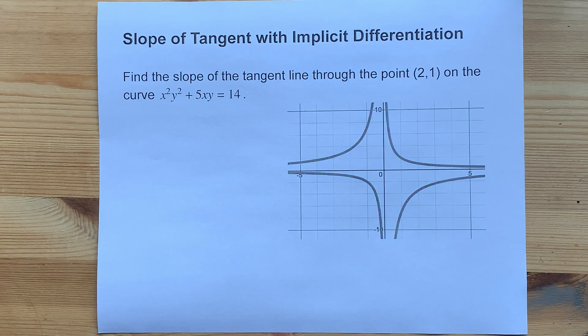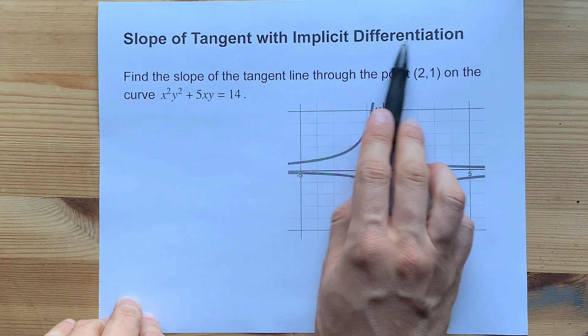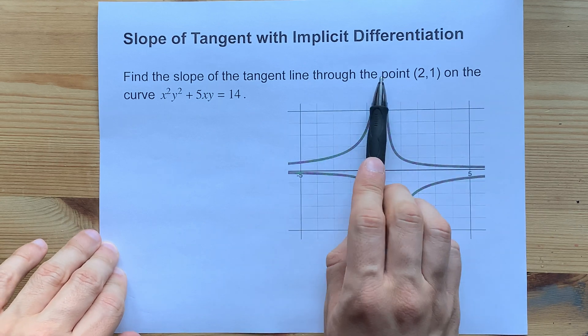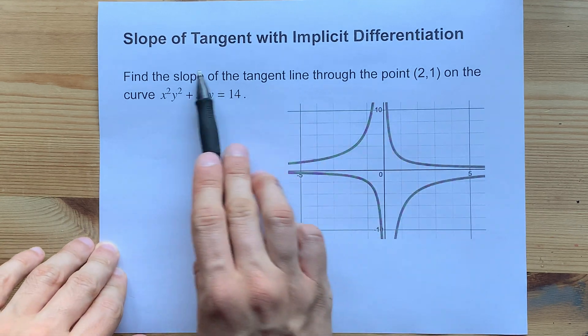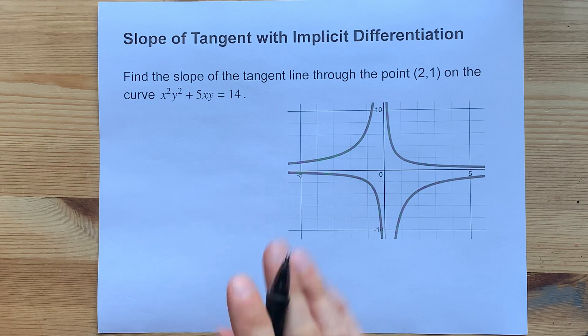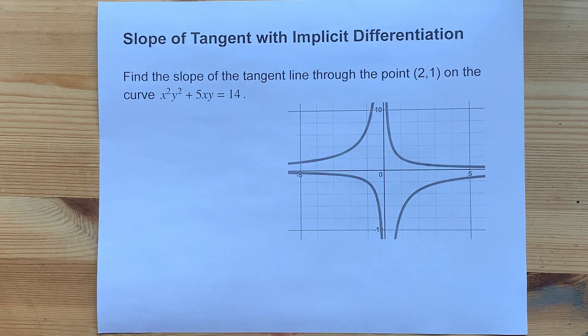If you've been asked for the slope of a tangent with implicit differentiation, and they gave you a point on the curve to find the slope of that tangent at, congratulations, you have an easy question.